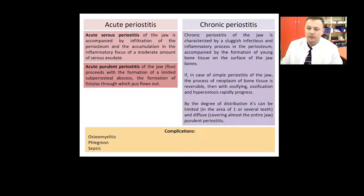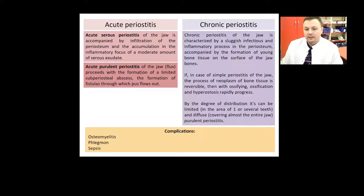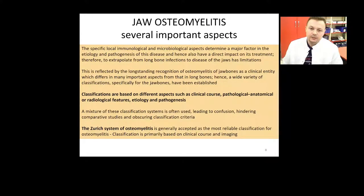Chronic periostitis is accompanied by the formation of young bone tissue on the surface of the jaw bones. In simple periostitis the process of neoplasia of bone tissue is reversible, whereas with ossifying periostitis and hyperostosis, it rapidly progresses. By degree of distribution it can be limited or diffuse, covering almost the entire jaw. Complications of periostitis include osteomyelitis, phlegmon, or sepsis.